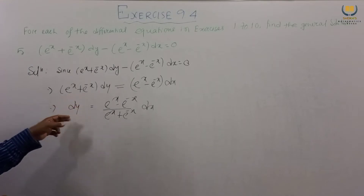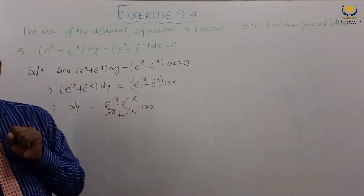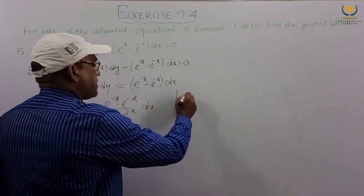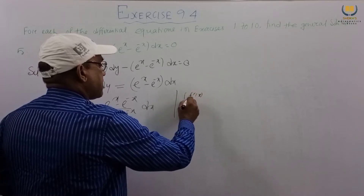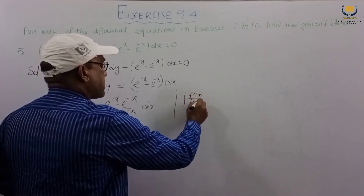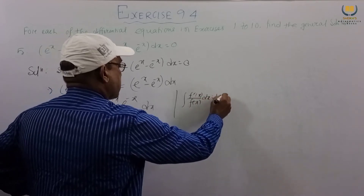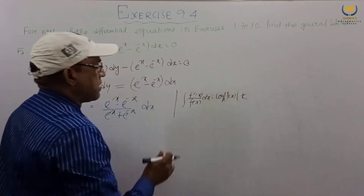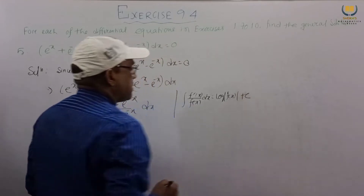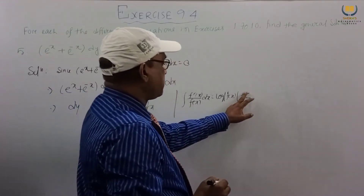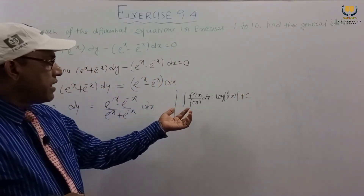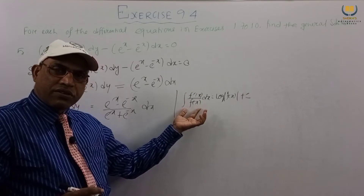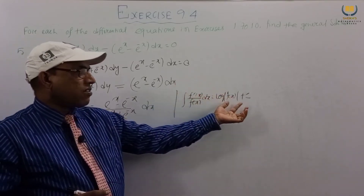Here dy is alone, and dx is in terms of x. We now apply the integration formula: the integral of f'(x) divided by f(x) dx equals log|f(x)| plus c. If the differentiation of the denominator appears in the numerator, the answer is the log of the denominator.